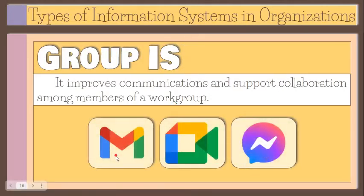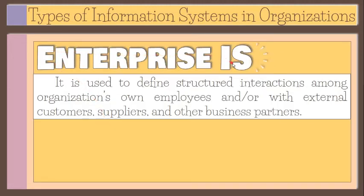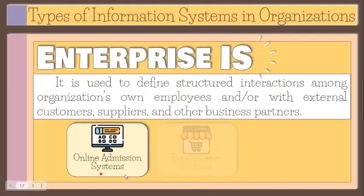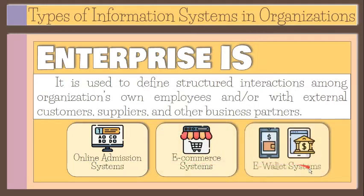Finally, the enterprise information system includes information systems that organizations use to define structured interactions among their employees and with external customers, suppliers, providers, government agencies, and other business partners. Examples include systems used to perform internal activities or those that support activities with external customers and suppliers, like online admission systems, e-commerce systems, and e-wallet systems.